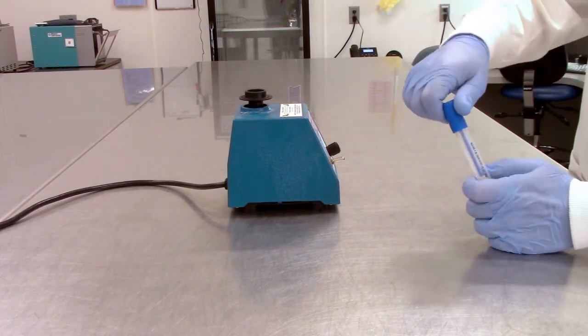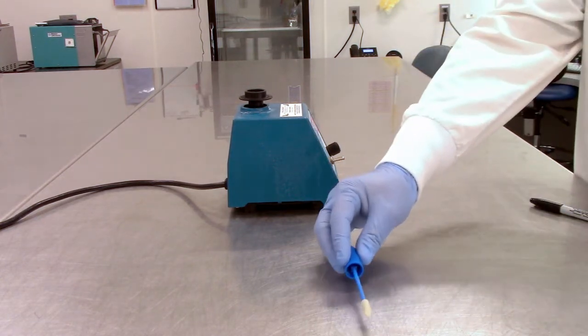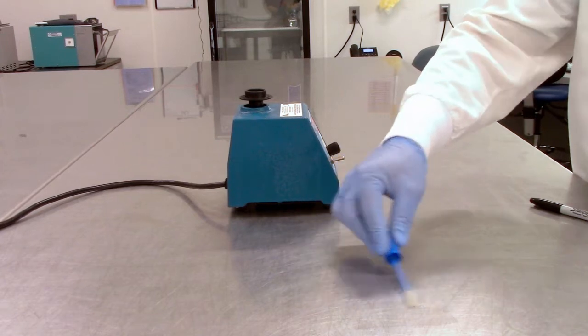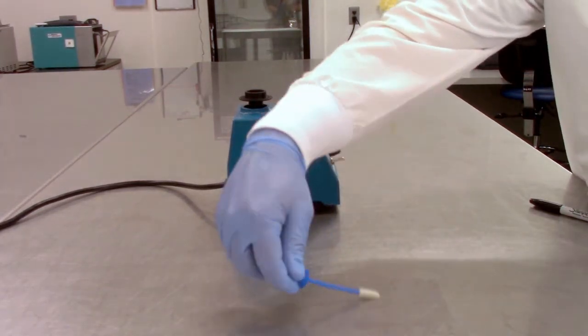With the swab test the area the same way you would with the sponge, covering an area about 10 centimeters by 10 centimeters. Flip the swab and cover the same area.